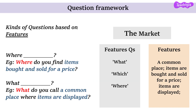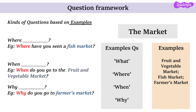If the group discussion moves to the features of the market, question starters like these could be used. Using where: Where do you find items bought and sold for a price? Using what: What do you call a common place where items are displayed? For the examples category, questions could use what, where, when and why: Where have you seen a fish market? When do you go to the fruit and vegetable market? Why do you go to the farmer's market? All of these questions are based on the examples of the topic market.